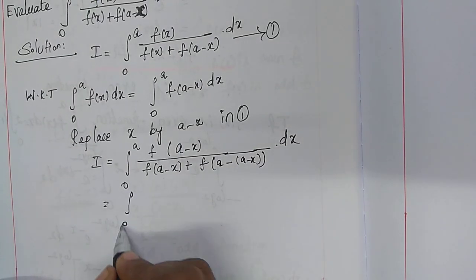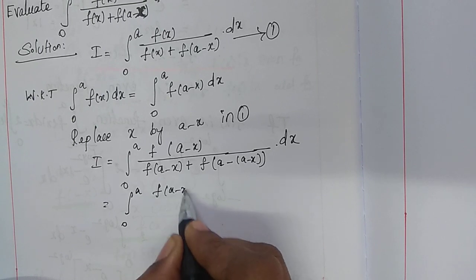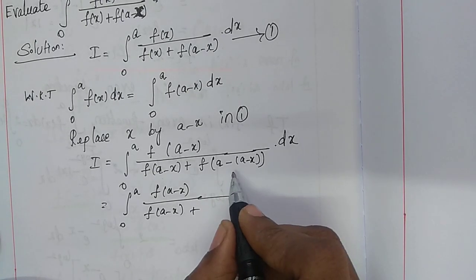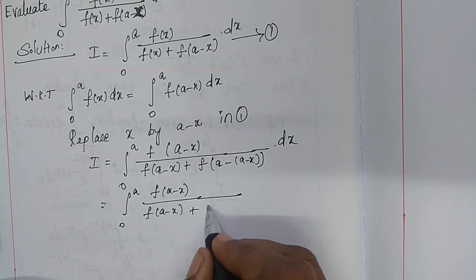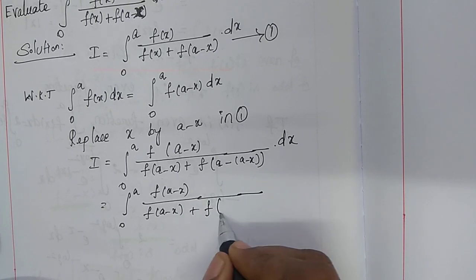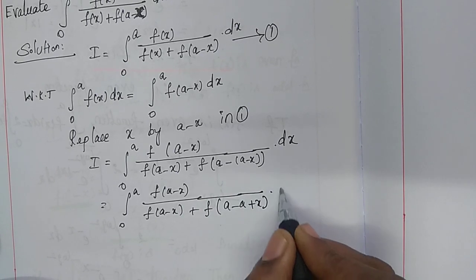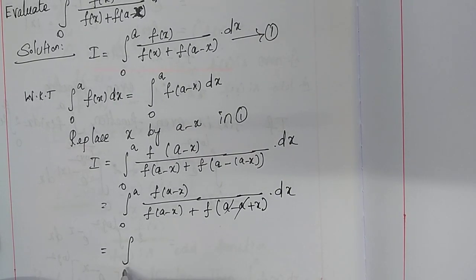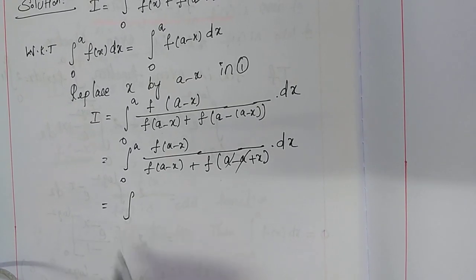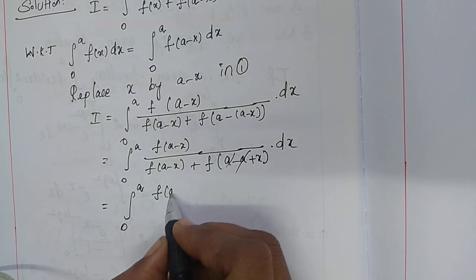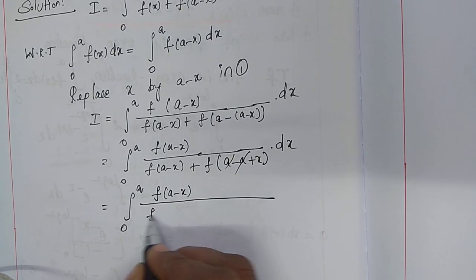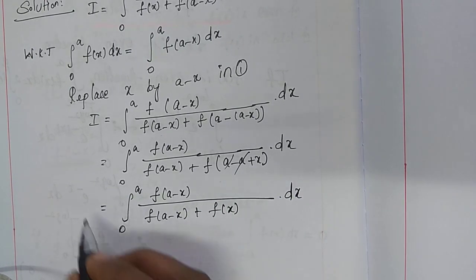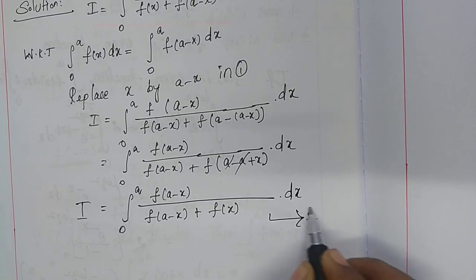This simplifies to the integral from 0 to a of f(a minus x) divided by f(a minus x) plus f(x), dx. Here, the minus is multiplied inside: f(a minus a plus x) gives f(x), since a minus a cancels. Therefore this equals the integral from 0 to a of f(a minus x) over f(a minus x) plus f(x), dx. This is equation number two.